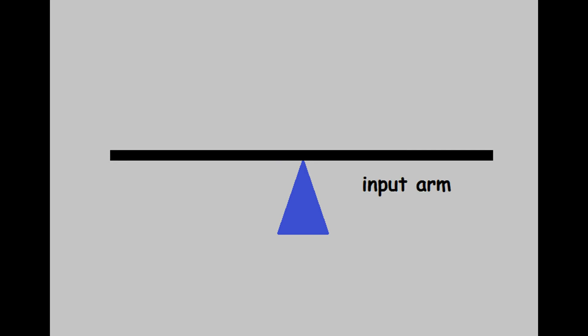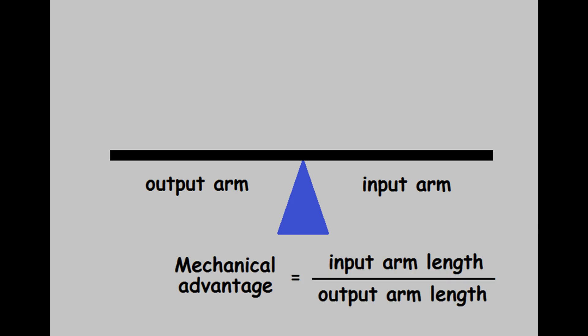The lever's going to have an input arm where you apply pressure to it, and an output arm where the input pressure or forces that you apply will be transferred to the item you're trying to move. Figuring out the mechanical advantage that a lever will give you is actually some pretty easy math. You just divide the length of the input arm by the length of the output arm.